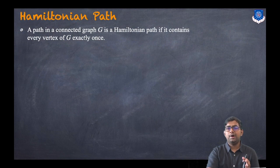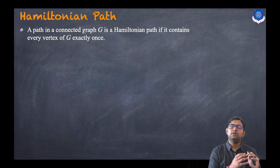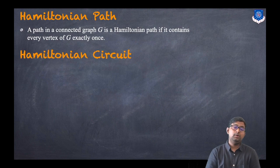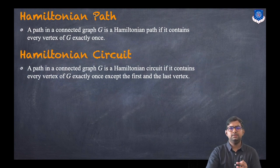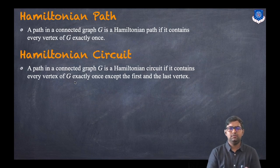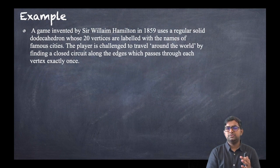A path in a connected graph G is a Hamiltonian path if it contains every vertex of G exactly once. Note that in an Eulerian path the condition was for every edge, whereas in a Hamiltonian path the condition is for every vertex. A Hamiltonian circuit is a path that contains every vertex of G exactly once, except the first and the last vertex, since it is a circuit.